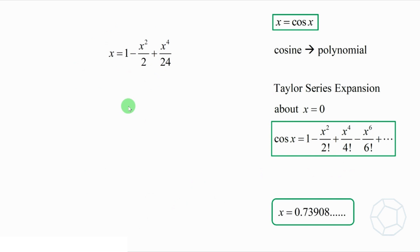Simplify and rearrange the terms. We have a polynomial equation of power 4. We call it a quartic equation. x to the power 4 minus 12x squared minus 24x plus 24 is equal to 0.